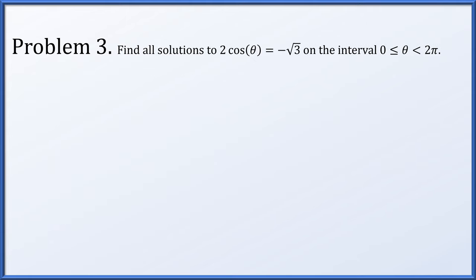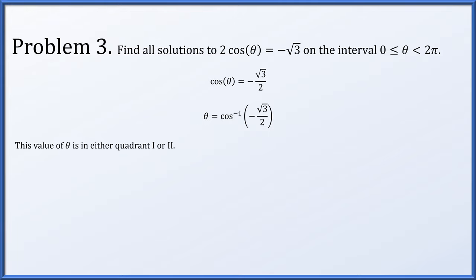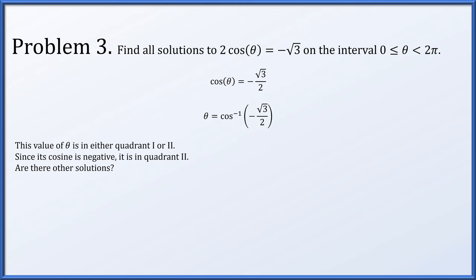In problem 3, we find all solutions to 2 times cosine of theta equals minus root 3 on [0, 2π). Dividing by 2, cosine of theta equals minus root 3 over 2. Taking arc cosine, theta could be arc cos(minus root 3 over 2). The range of arc cosine is [0, pi], covering quadrants 1 and 2. Since the cosine is negative, this is a quadrant 2 solution.